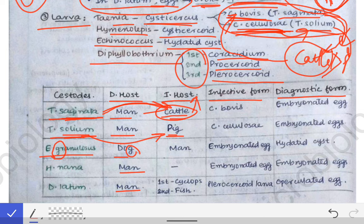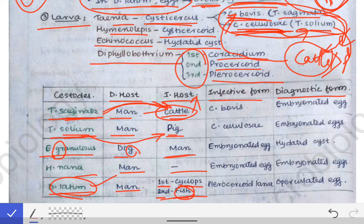In Echinococcus granulosus, the intermediate host is man. In Hymenolepis nana, there is no intermediate host. In Diphyllobothrium latum, there are two intermediate hosts: the first is Cyclops (found in water bodies) and the second is fish. A mnemonic: 'lote mach' is a popular fish in Bengali fish markets, and 'lote' sounds like 'latum' — so the intermediate host of D. latum is a fish.